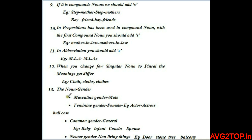The thirteenth condition covers noun gender. Masculine gender refers to males — for example, actor. Feminine gender refers to females — for example, actress, cow. Common gender applies to both — for example, baby, infant, cousin, spouse. Neuter gender refers to non-living things — for example, door, stone, tree, balcony.